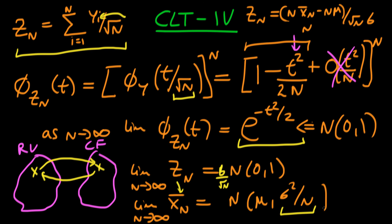So, independently of what type of random variable we start with, if we take the sample mean it tends in distribution, as the sample size tends to infinity, to a normally distributed variable with mean μ and variance σ²/n. That's the central limit theorem — a really powerful result because we haven't assumed anything specific about the underlying variables, yet we get a normal distribution at the end. I encourage you to review these videos again to make sure you fully understand the proof.